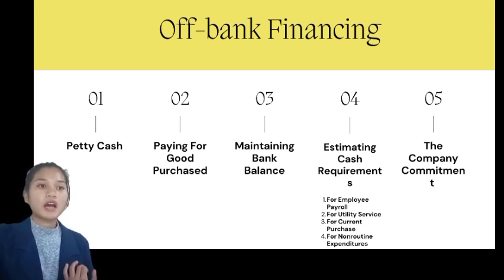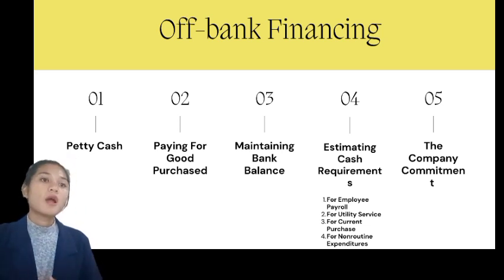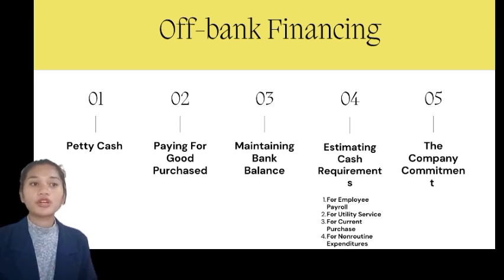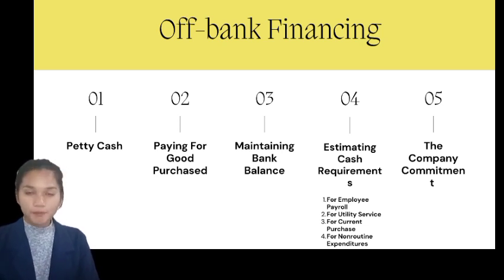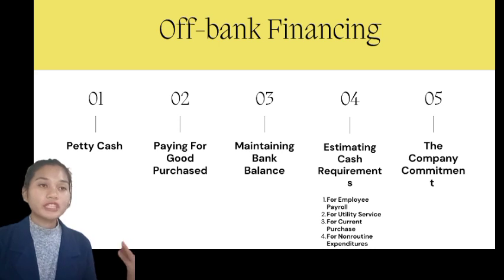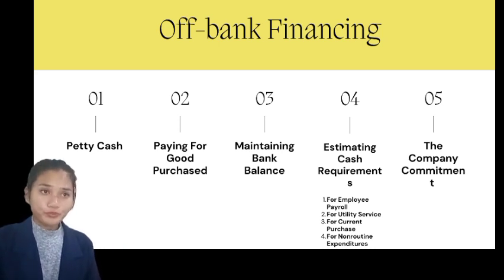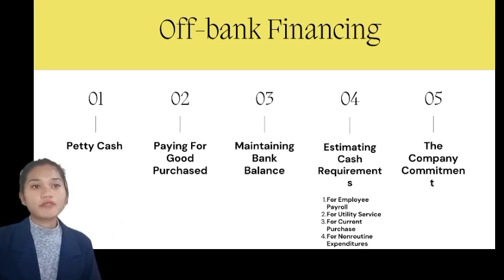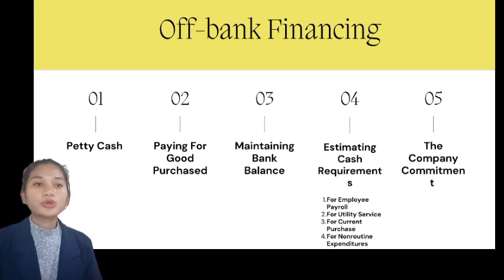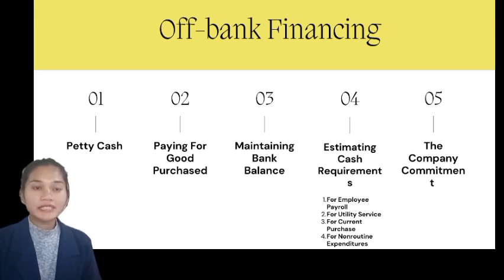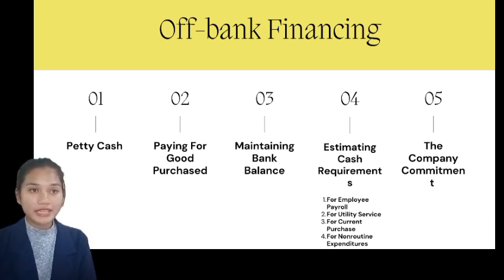The third is maintaining bank balances. Care must be taken to prevent overdrafts while making sure that other obligations such as minimum balance requirements are met. The fourth is estimating cash requirements. There are already established expense elements that influence the amount of cash needed. The treasurer must calculate how much money is required for regular expenses such as accounts payable, utility costs for light, power, gas, telephone, and telegrams, as well as currently purchased and non-regular expenses.